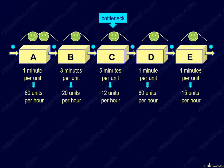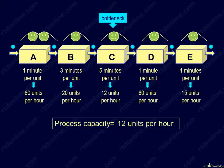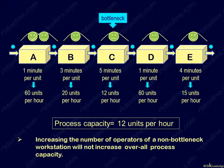Since station C remains as the bottleneck, the process capacity remains the same at 12 units per hour. Increasing the number of operators of the non-bottleneck workstation will not increase overall process capacity.